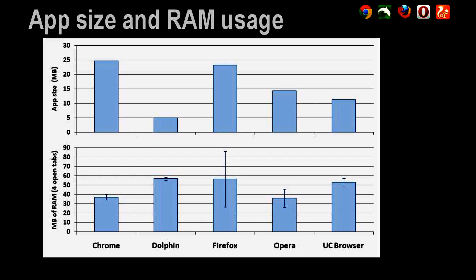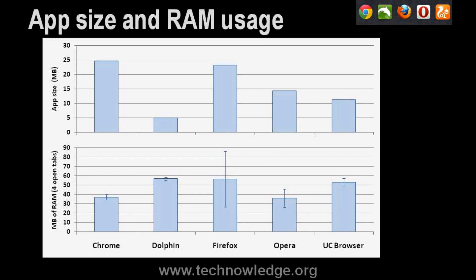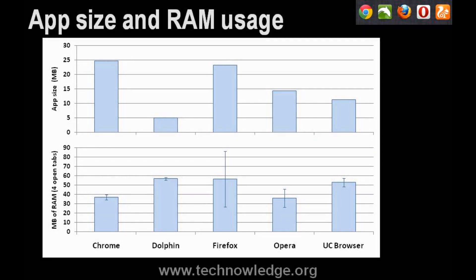As you can see, Dolphin is the smallest app, and Chrome and Firefox are roughly the same size. For RAM usage, Chrome and Opera use the least — between about 50 and 60 megabytes of RAM.